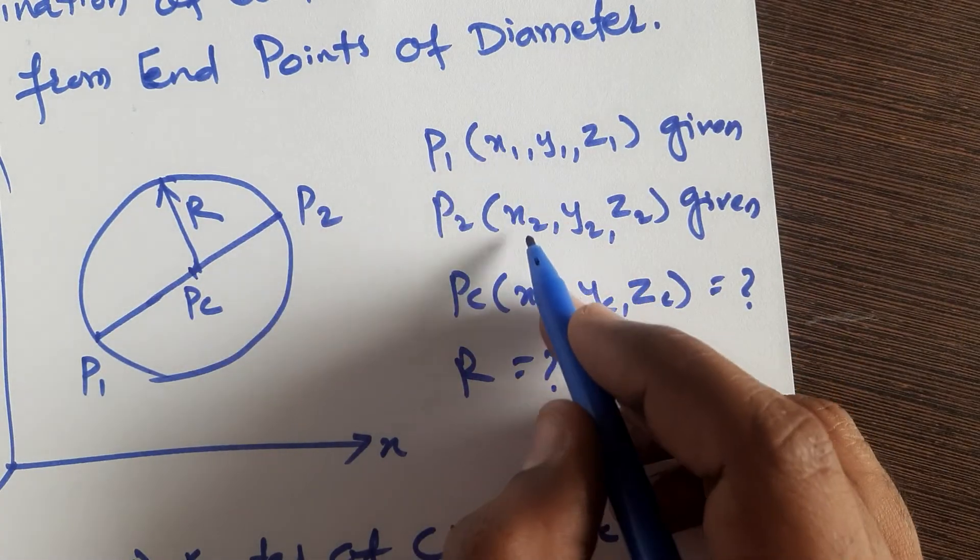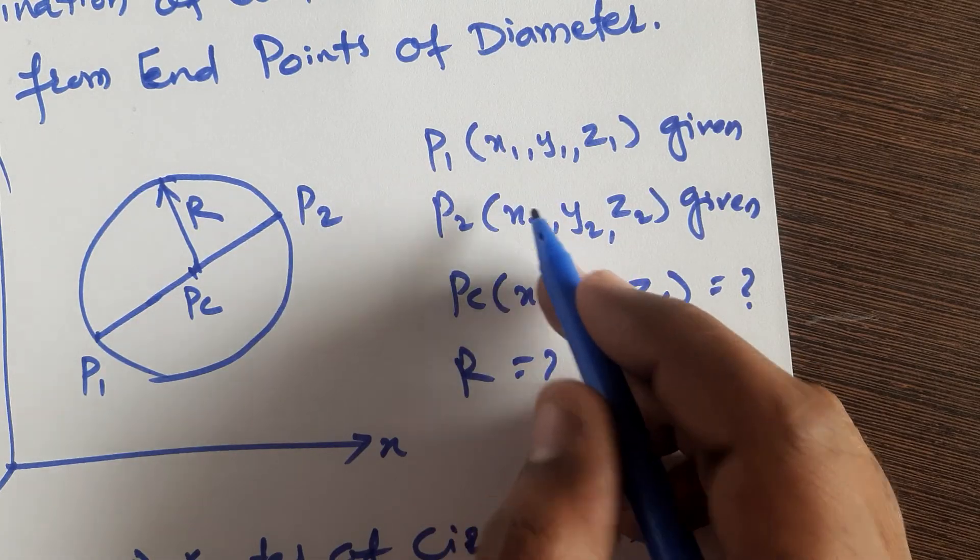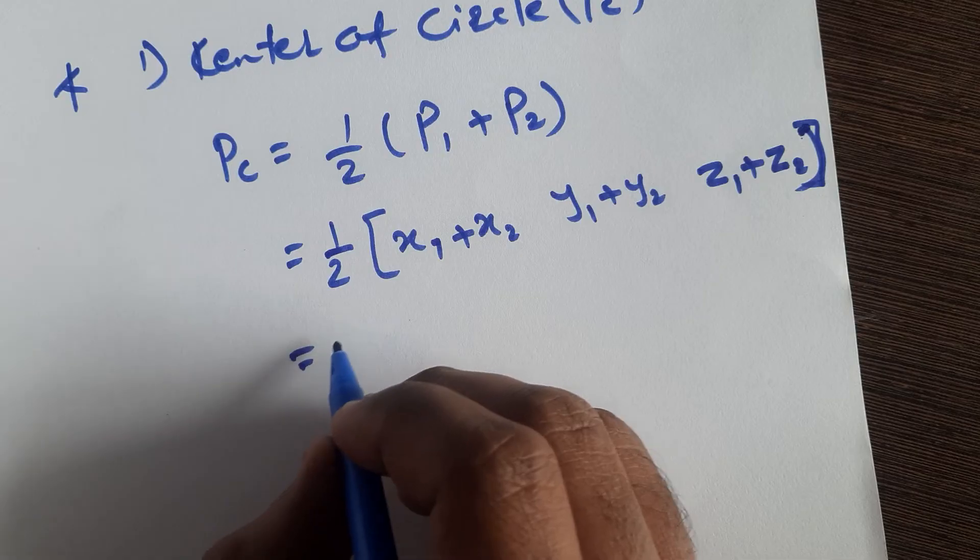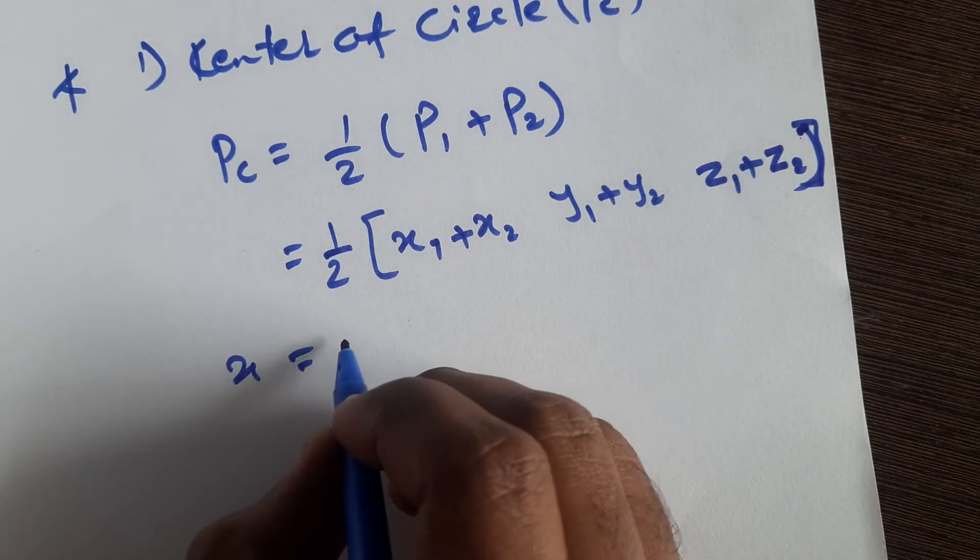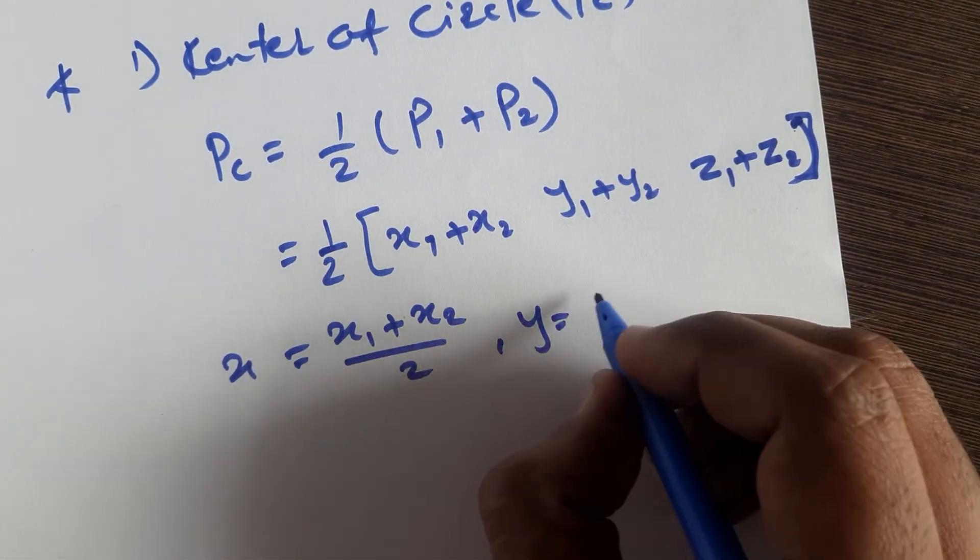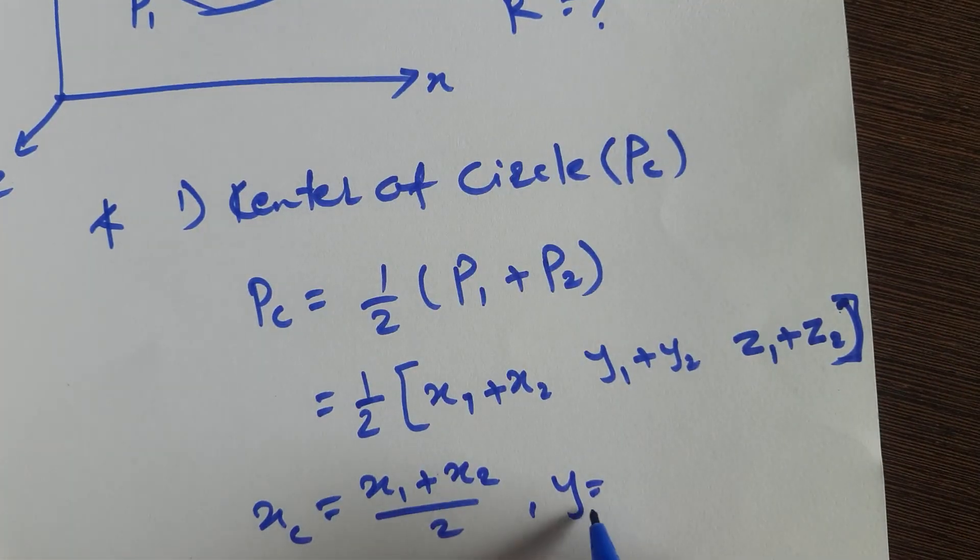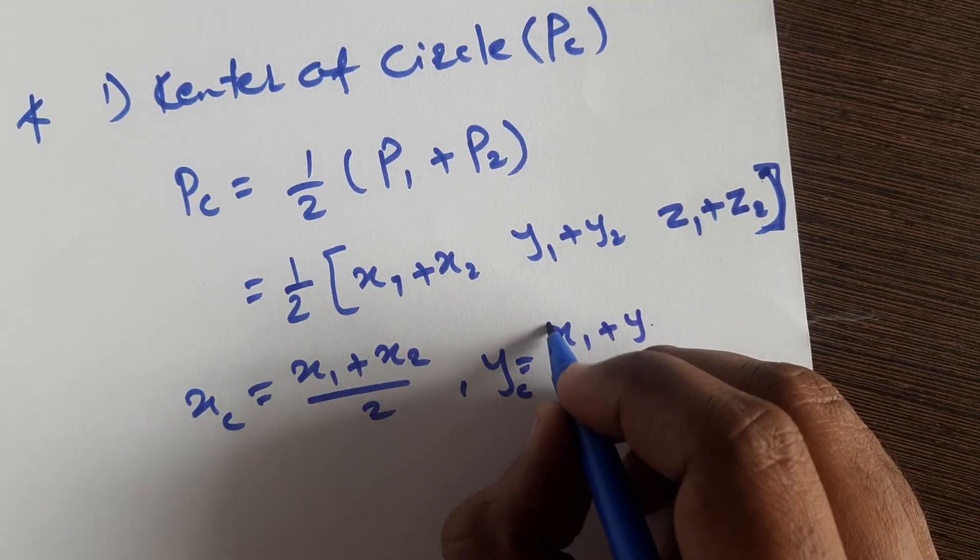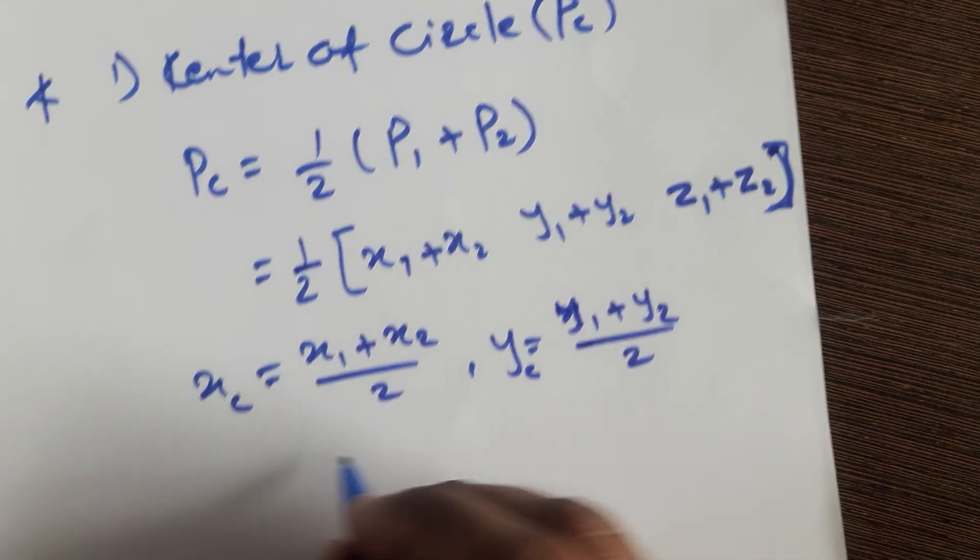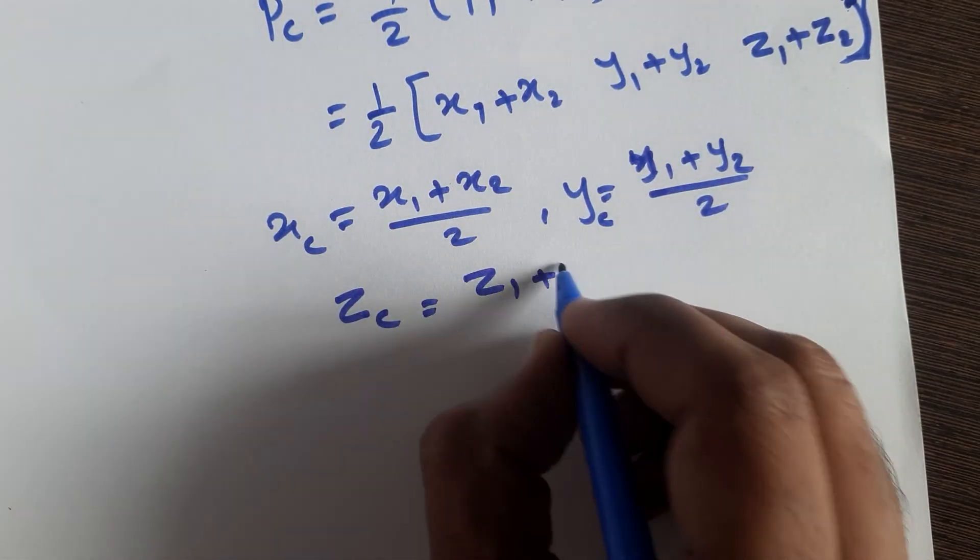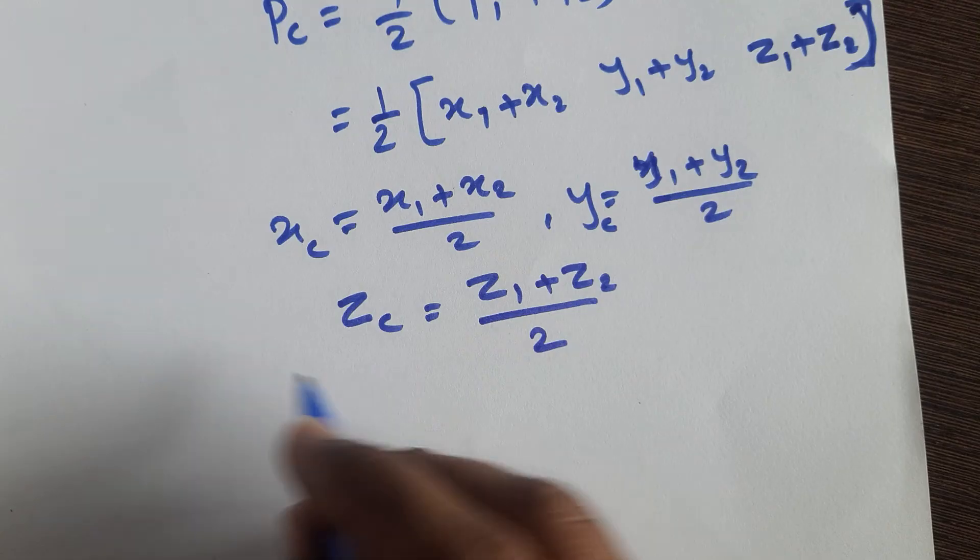Now how to calculate: suppose here x1 and x2 are 2 and 3, so 2 plus 3 divided by 2. So if we calculate, your xc will be (x1 + x2) divided by 2, yc will be (y1 + y2) divided by 2, and zc will be (z1 + z2) divided by 2. So in this way you can calculate the coordinates of the center point.